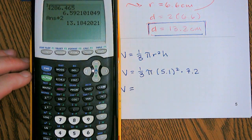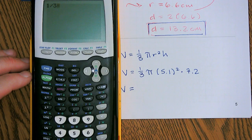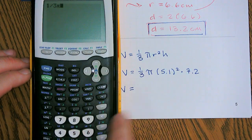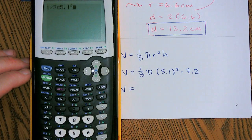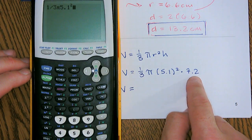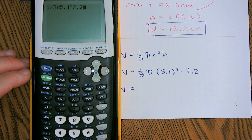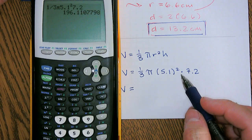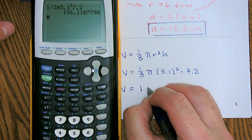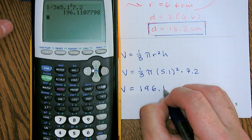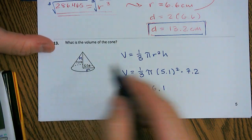So we've got one-third, so let's put that one divided by three. We're going to take our radius and then square it, 5.1 squared, and then multiply that by our height, 7.2. So we're going to get approximately 196.11 or 196.1, and we're talking about feet, so cubic feet.